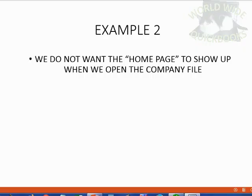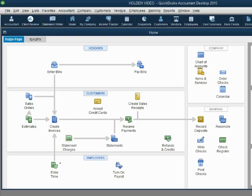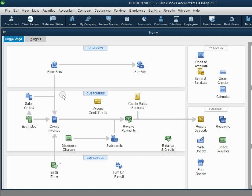The next example preference we will change is to stop the home page from showing up when we open the company file. Right now, when we open the company file, the home page populates the center of the screen. We don't want the home page there anymore — we don't use it. In this course, we only use the main menu. So we will stop the home page from popping up every time we start the program.